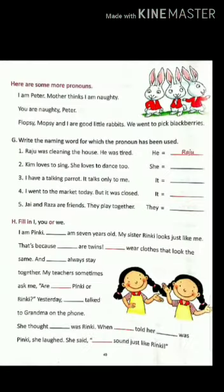Now question number G. Here some pronouns are given. You have to write the name of the person for which the pronoun has been used. For example, 'he' has been used for Raju. Similarly, 'she' is used for Kim and 'it' is used for Parrot.